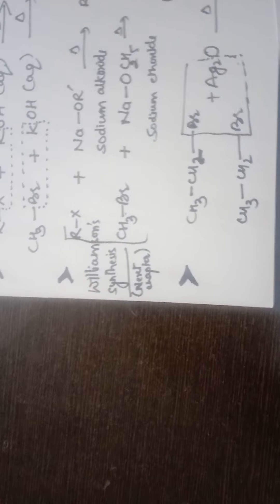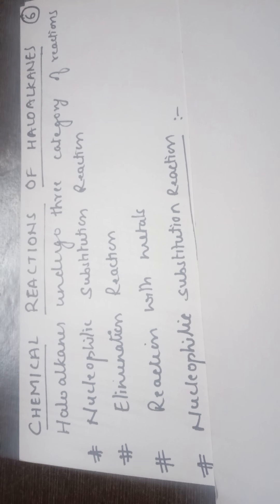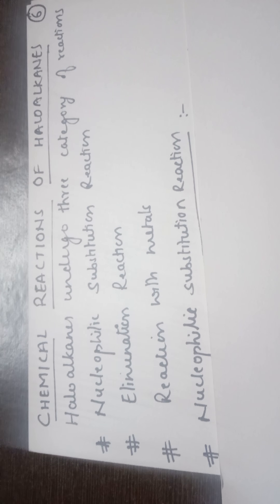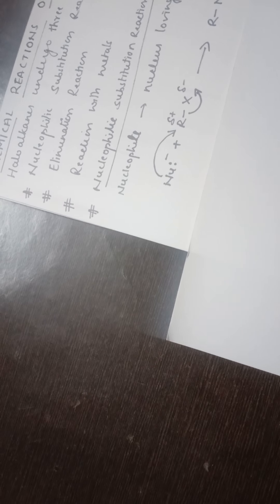Now switching to the very important concept regarding the chemical properties of haloalkanes. Haloalkanes undergo three types of reactions: nucleophilic substitution reactions, elimination reactions, and reactions with metals. We will be discussing each category one by one, starting with nucleophilic substitution reactions.